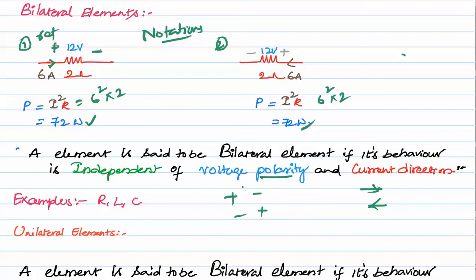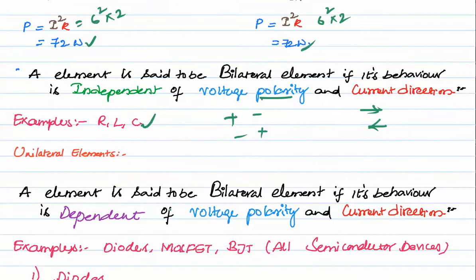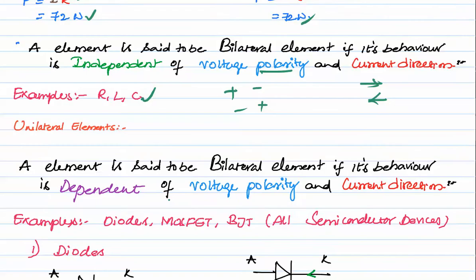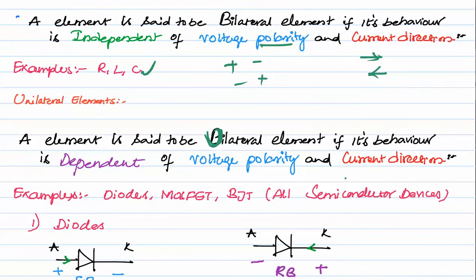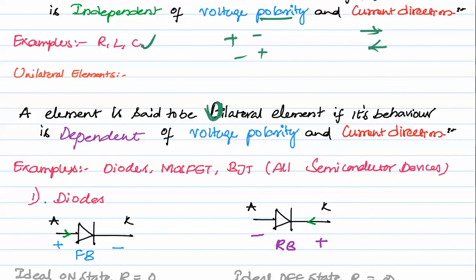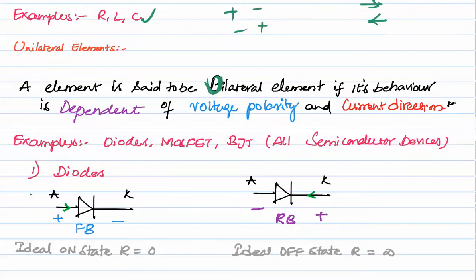An element is said to be unilateral if its behavior is dependent on voltage polarity and current direction. The best example is a diode. When the diode is in forward bias, current flows from anode to cathode; for an ideal diode, its on-state resistance is zero. If we apply reverse polarity, the ideal diode's off-state resistance is infinity and current is zero. If the polarity changes, the behavior of the device changes automatically.